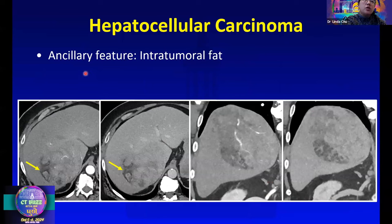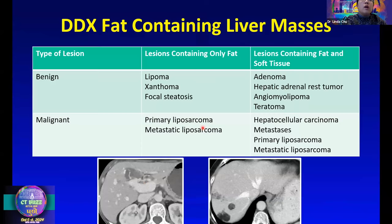This case nicely shows the ancillary feature of intratumoral fat. We have a very heterogeneous-looking mass with some internal fat. Having fat in a liver mass is a helpful feature because it narrows the differential to either HCC or adenoma. If you see a fat and soft tissue containing mass in the liver, we are typically encountering either adenoma or HCC. Other things on the list include hepatic adrenal rest tumor, angiomyolipoma, teratoma, metastases, and liposarcoma.